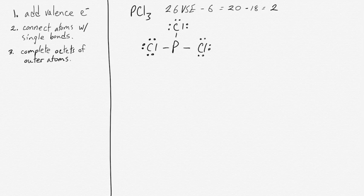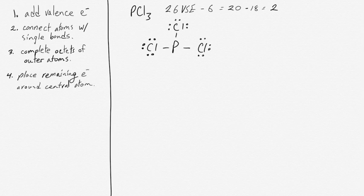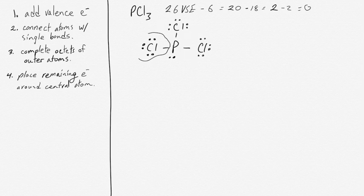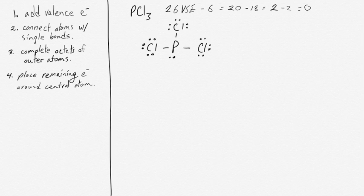If you end up in a situation where you've used up all the electrons on the outer atoms and they can't hold any more, you have to place those remaining electrons around the central atom — that's step four. We have two electrons remaining, so we place them around the phosphorus, using up all 26 valence shell electrons. Each atom now has eight electrons: the chlorines each have six from lone pairs and two from the bond, and phosphorus has six from bonds plus two from the lone pair for a total of eight. We have a satisfied octet on each atom and a good Lewis structure.